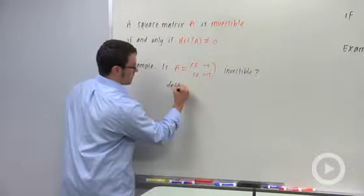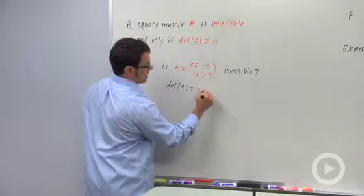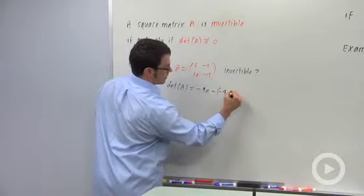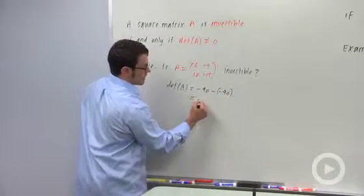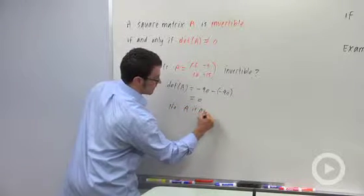We calculate the determinant of A, and that's 6 times negative 15, negative 90, minus negative 9 times 10, negative 90. So negative 90 plus 90, that's zero. No, A is not invertible.